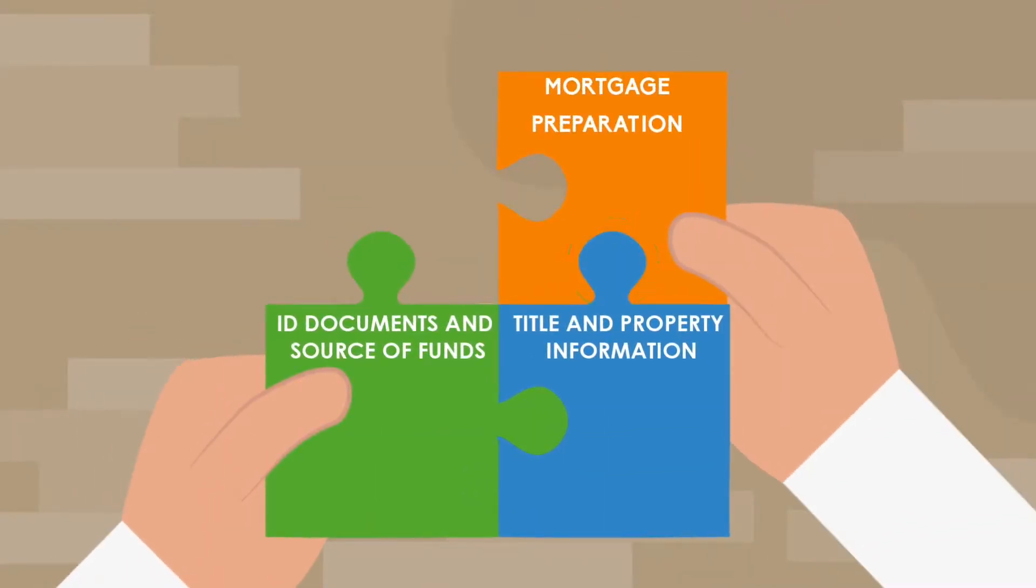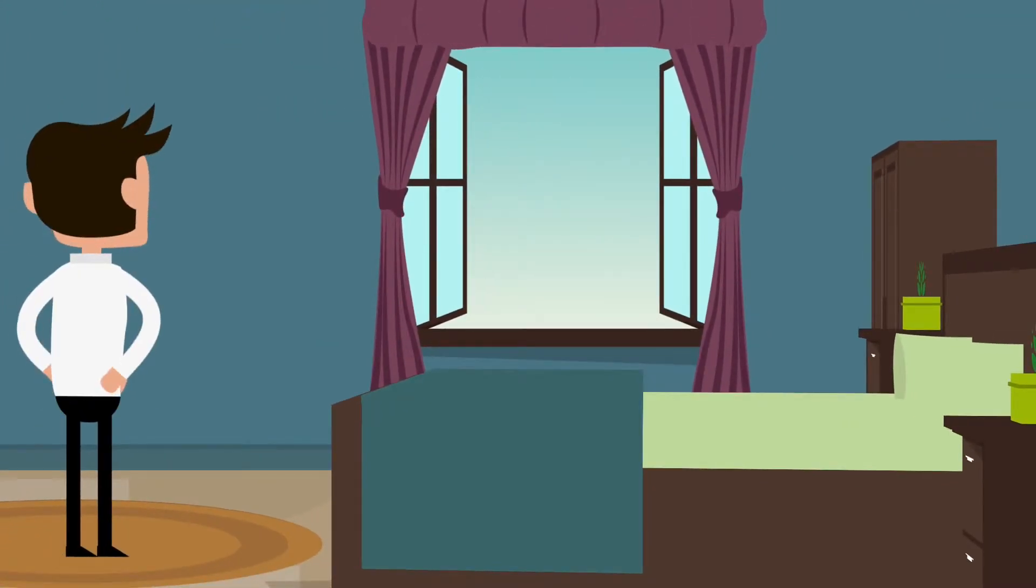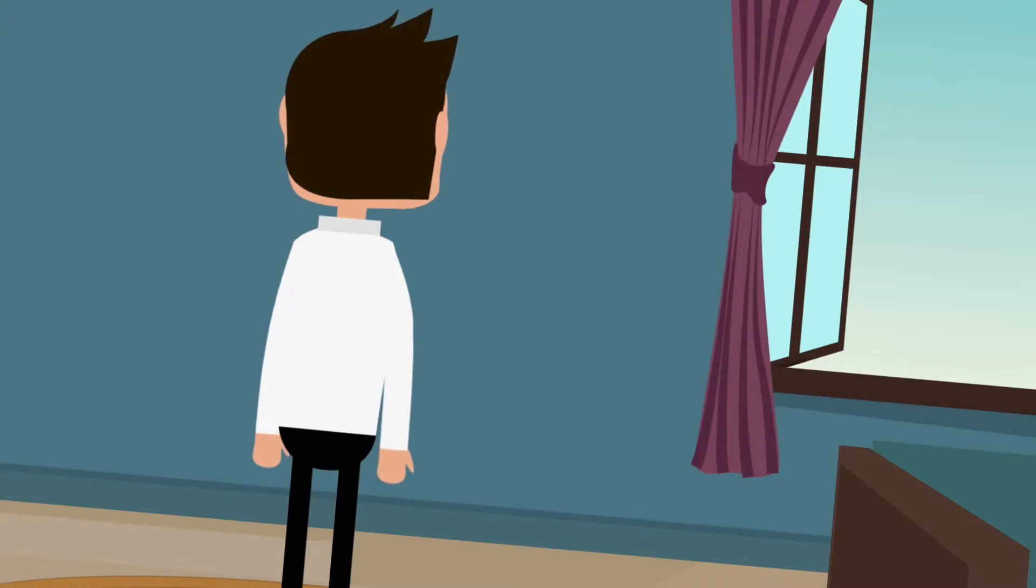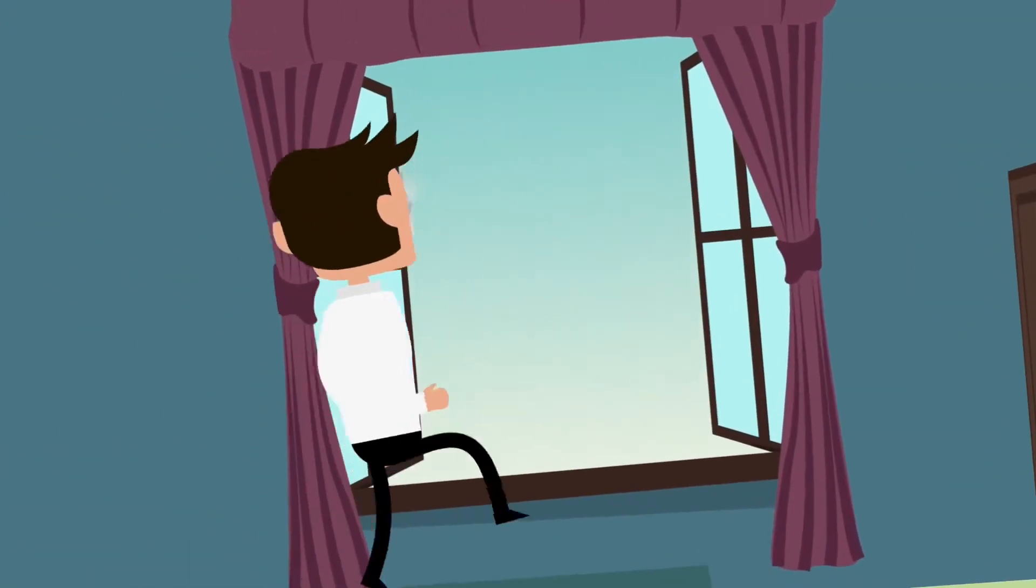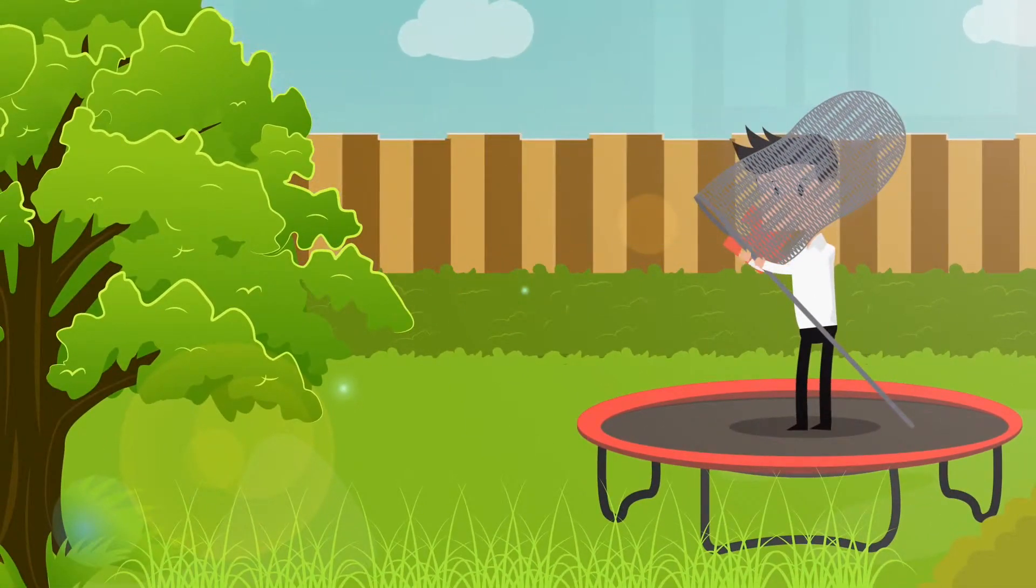Even before you find the house of your dreams, it's worth asking your mortgage broker to check your credit rating and income so that you know how much you'll be able to borrow. If you don't have a broker, then ask your conveyancer. They deal with brokers all the time and may be able to recommend one.